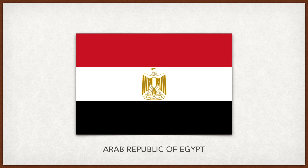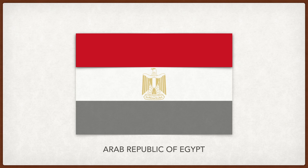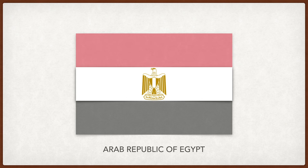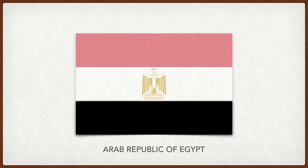Egypt. The red represents the British occupation of the country, the white the bloodless revolution, and the black independence.